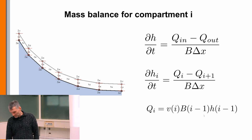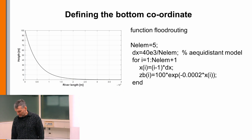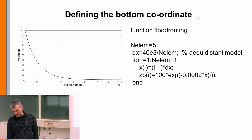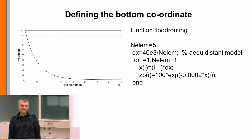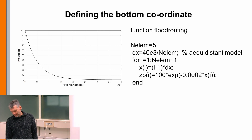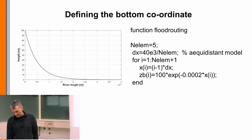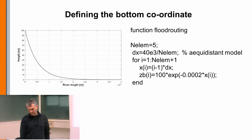Now I would like to build up the code. The code starts by defining the bed coordinate. We first say how many compartments we have — this variable I call 'n_element', the number of elements or compartments. We have five compartments: one, two, three, four, five.